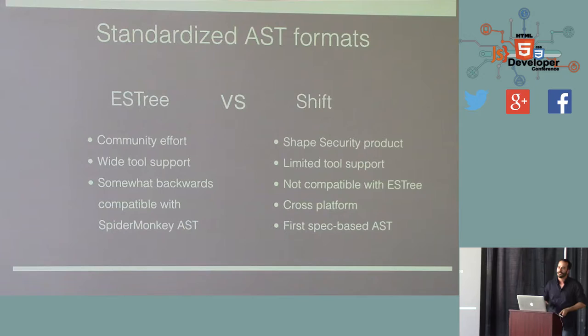So the two major standardized AST formats are ES tree and Shift. ES tree is largely a community effort which stemmed from the SpiderMonkey AST. SpiderMonkey AST was released in 2010 by Mozilla. It's an artifact of the SpiderMonkey interpreter and it's got wide tool support. It's been around for a long time. It has its issues. ES tree has made a lot of those issues better, but it still tries to retain a bit of backwards compatibility.